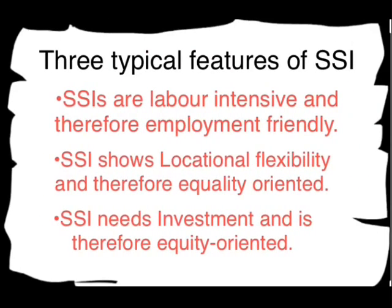Now we will talk about the features of SSIs — SSI means small scale industries. Now look at our economy: growth with social justice. This means growth in GDP and social justice, meaning the gap between the rich and the poor should reduce. Small scale industries have a very important role to achieve growth with social justice. We will discuss this with the features.